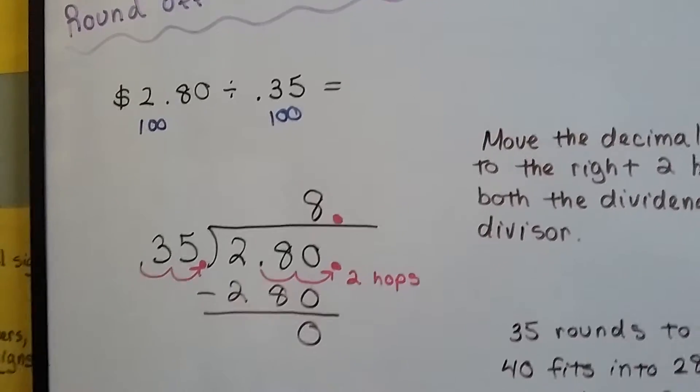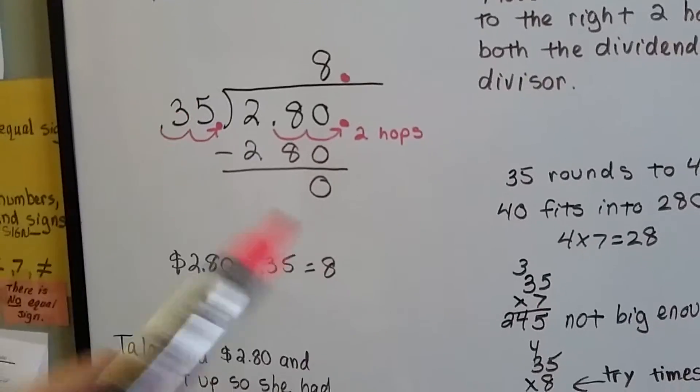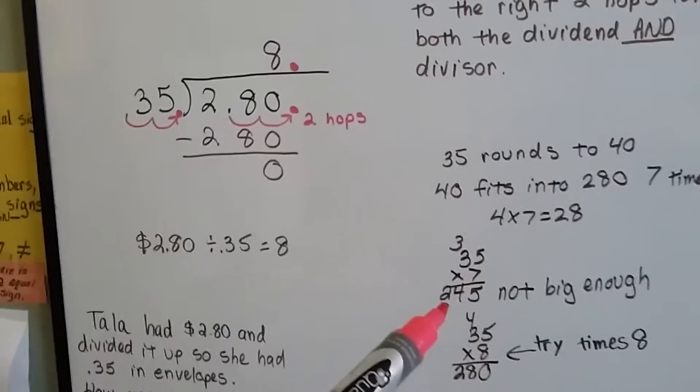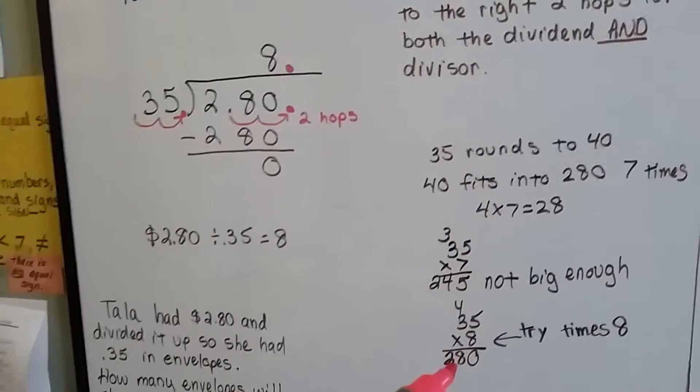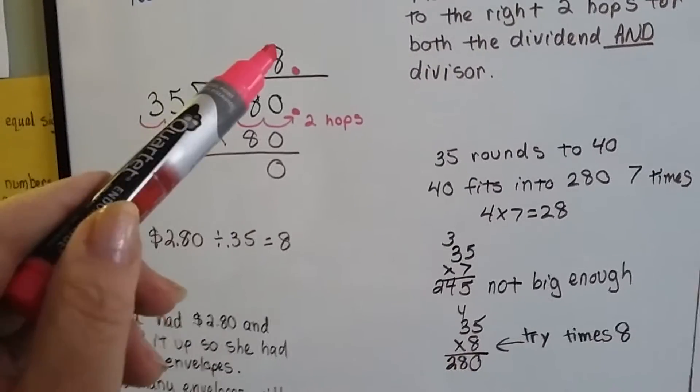And then the quotient will have the decimal point straight up from our new spot from the two hops. We can do a little math on the side and see that 35 times 7 is not big enough, but 35 times 8 is perfect. That's 280. So it goes in eight times.